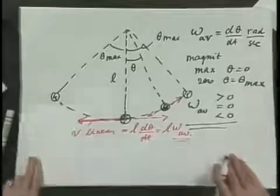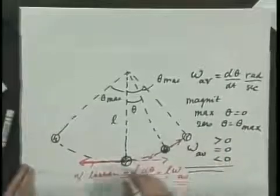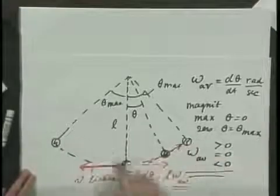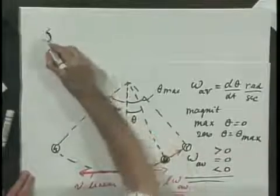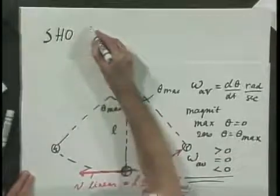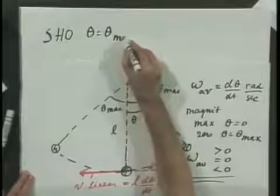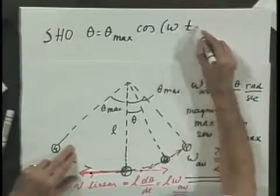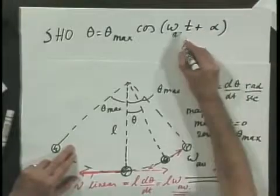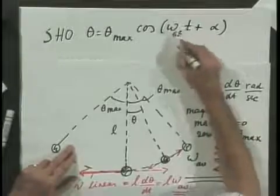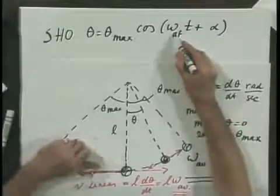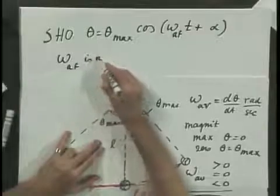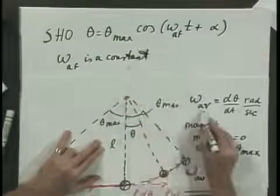Let us now think about simple harmonic oscillation, which is to a good approximation the motion of this pendulum in terms of theta. I can write down an approximate simple harmonic oscillation: theta equals theta_max times the cosine — or sine if you prefer — of omega·t plus some phase angle alpha. This omega has nothing to do with the previous omega; this is the angular frequency, and it is a constant in time. It never changes, whereas the angular velocity does.